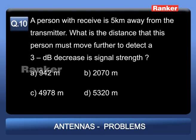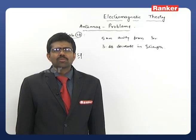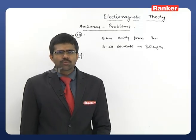Problem 10: A person with a receiver is 5 km away from the transmitter. What distance must this person move further to detect a 3 dB decrease in signal strength?